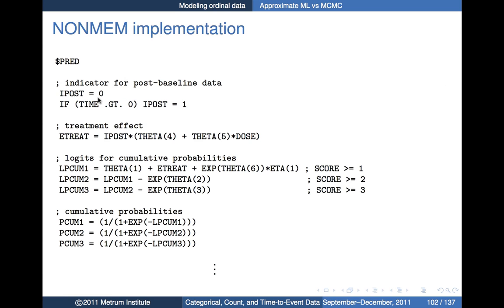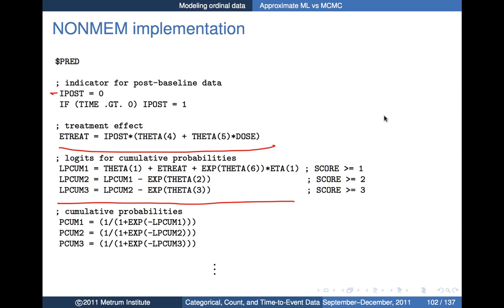In the NONMEM code, I_post is equivalent to the indicator I(T_ij > 0): it's either zero, or if time is greater than zero, I_post equals one. There's the treatment effect component, equivalent to the indicator times theta 4 plus theta 5 times dose. The code constructs the cumulative probabilities — LP_cum_1 would be the logit of the probability that Y is greater than or equal to 1, including the drug effect component and the random effect term for inter-individual variation.